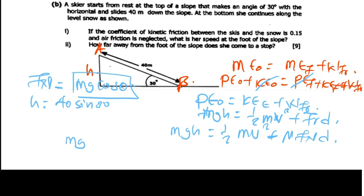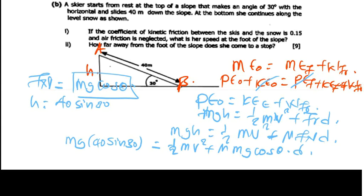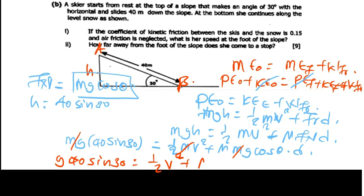Substituting, we get MG times 40 sine 30 equals half MV squared plus mu times MG cos theta times D. We can cancel mass everywhere, leaving: G times 40 sine 30 equals half V squared plus mu times G cos theta times D. Our goal is to find V.